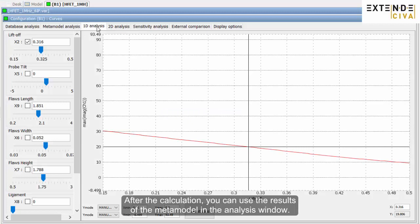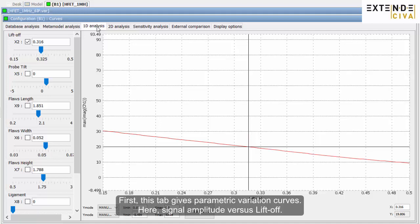After the calculation, you can use the results of the metamodel in the analysis window. First, this tab gives parametric variation curves, here, signal amplitude versus liftoff. You can observe that these curves are not based on discrete values, but are continuous.